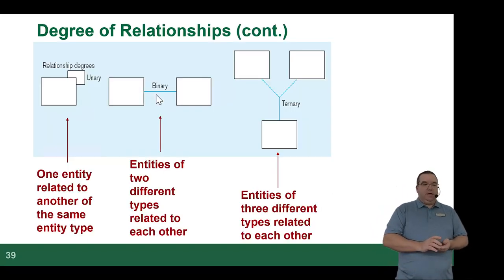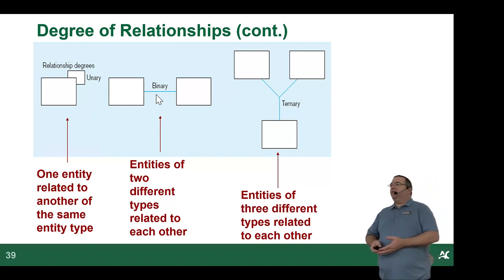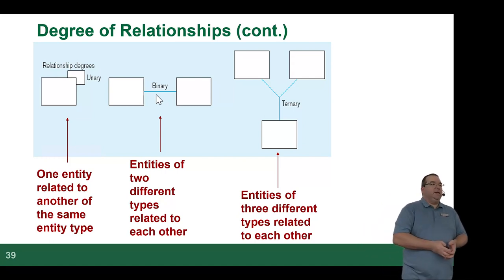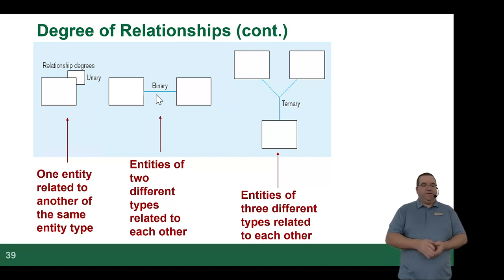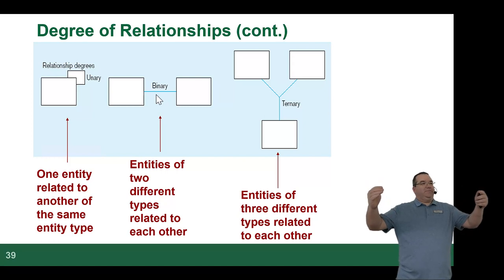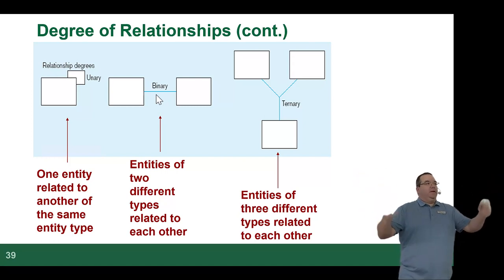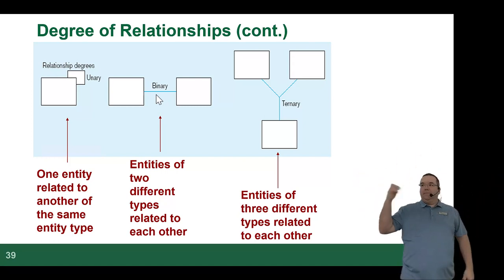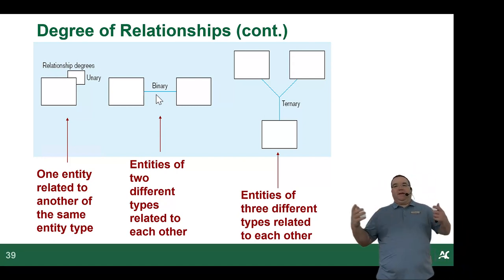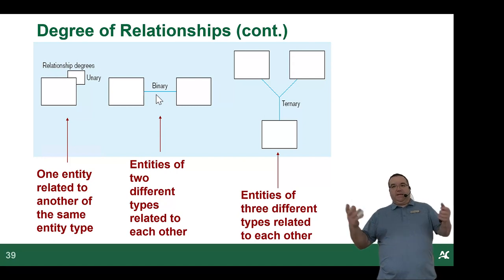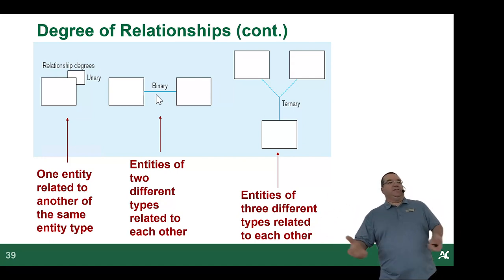A unary relationship is when an entity is related to itself. It's not a common thing to see, but you'll sometimes see it in a tree-like structure. For example, in an HR system, you'll have employees and managers, then the managers' managers, and the boss above them — but they're all employees. So it's a self-referencing table where one of the attributes is basically the primary key of another record in the same table.